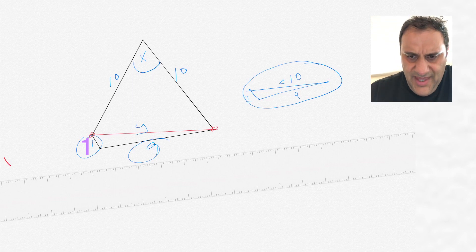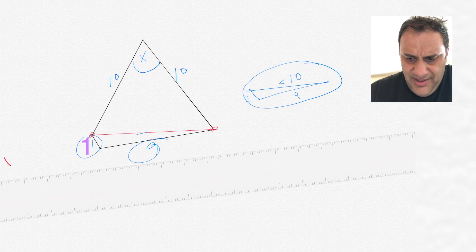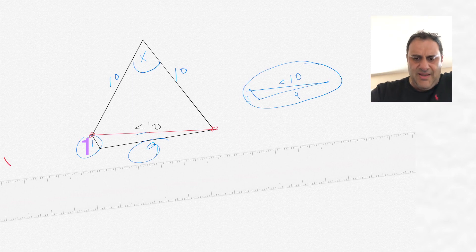So y, that side there, has to be less than 10. That is, y has to be something less than 10.